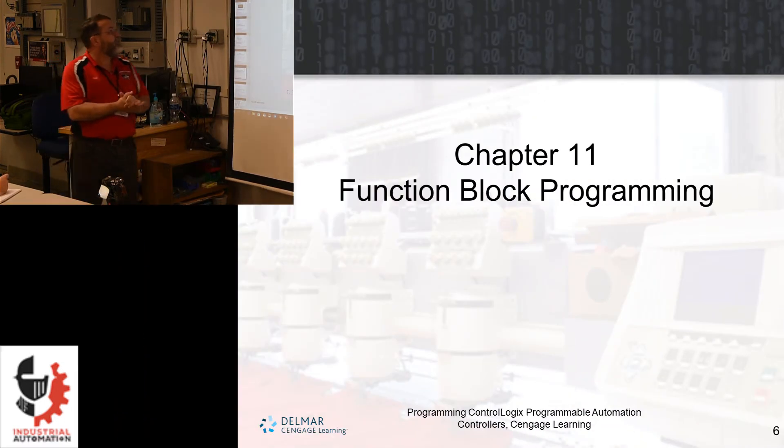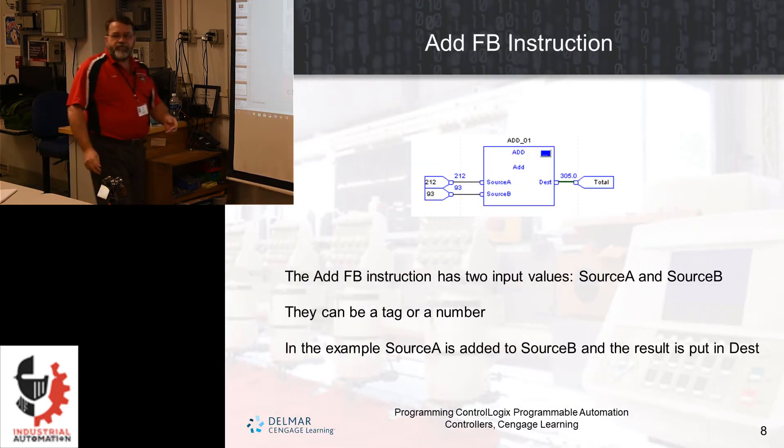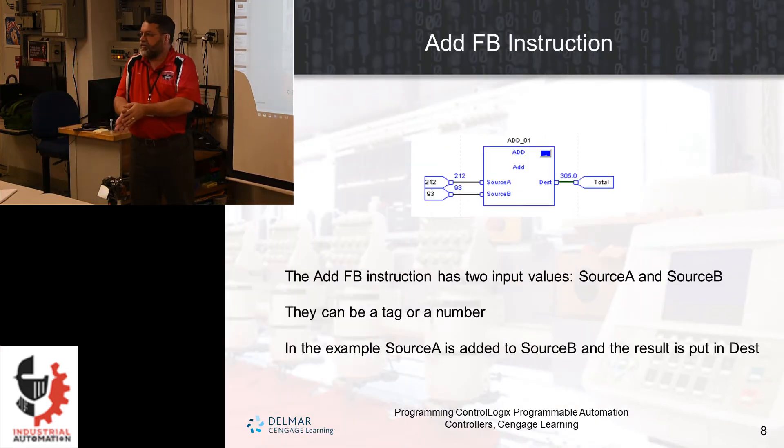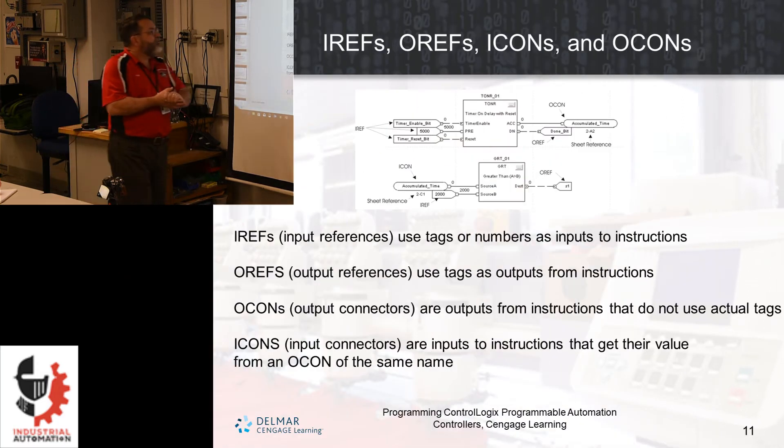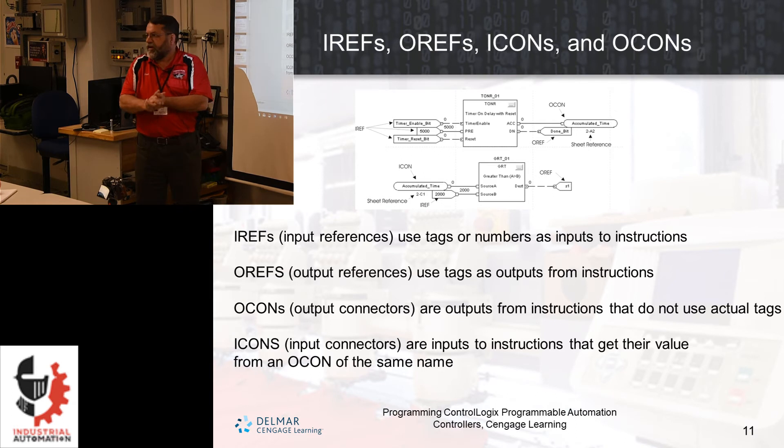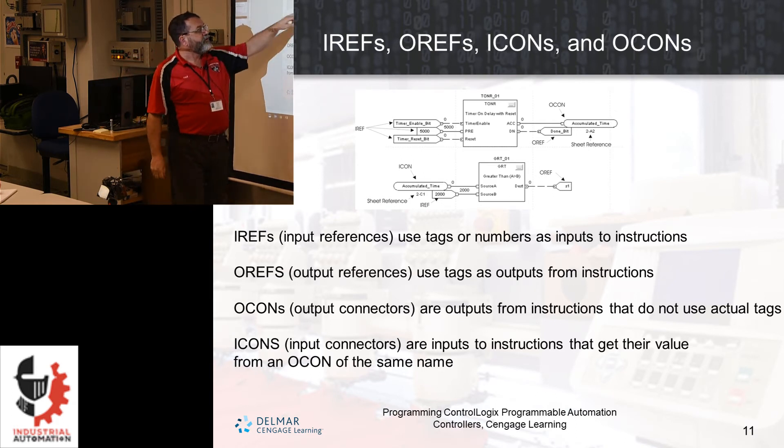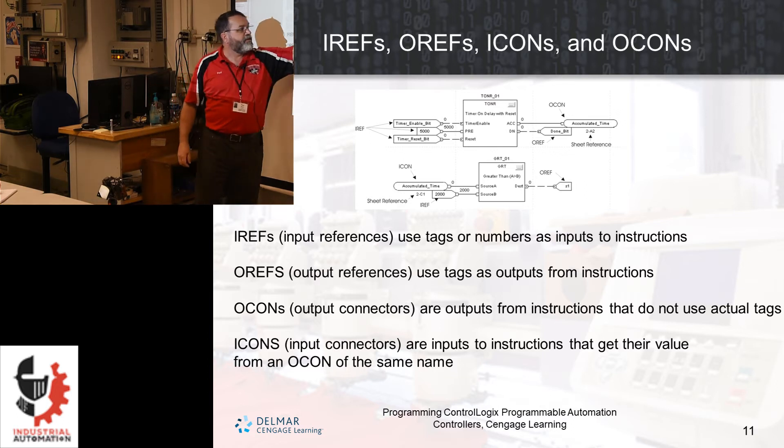The first advanced programming language is function block. And with function block we have a lot of different blocks and each block does different activities. The neat thing with function block is when you put a function block into your routine it automatically creates the tags for you. There's four main components for tying things together with function block and you're going to get mostly familiar with the inputs and outputs.